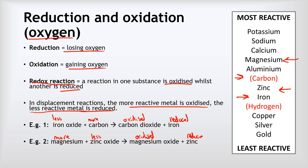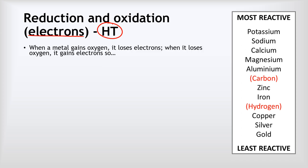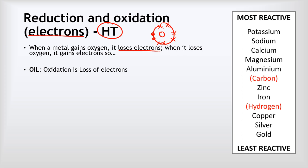Another way to think about oxidation and reduction is in terms of the movement of electrons. This is higher tier material, so if you're foundation you can skip this slide. When a metal gains oxygen it also loses electrons. Oxygen has six electrons in its outer shell — it's in group six — so whenever it reacts it gains two more by taking them from a metal, causing the metal to lose electrons. This leads to a different way of describing oxidation: oxidation is the loss of electrons.